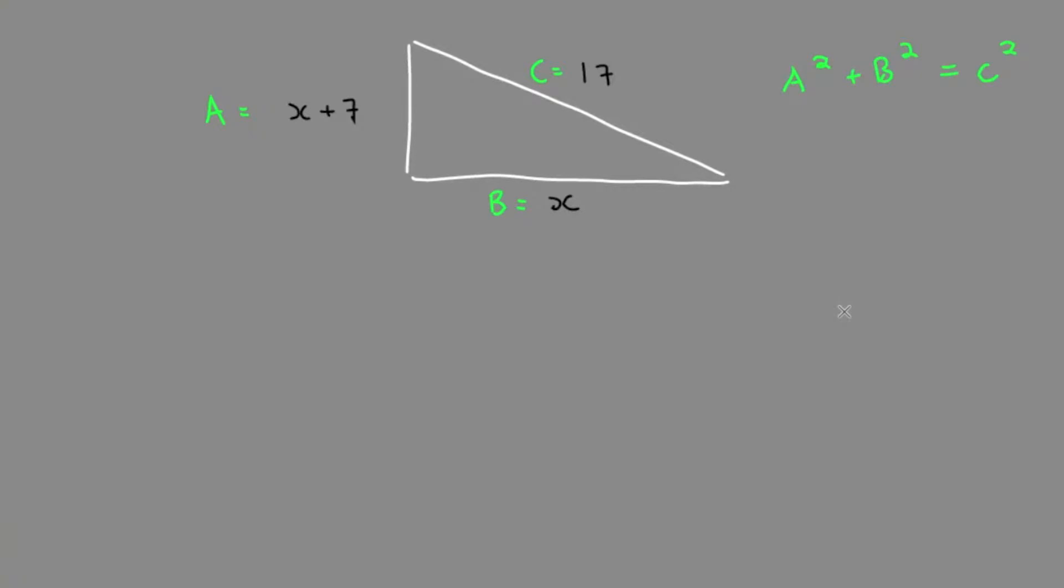This is the Pythagorean theorem. a squared is x plus 7 squared, plus b squared which is x squared, equals c squared which is 17 squared.